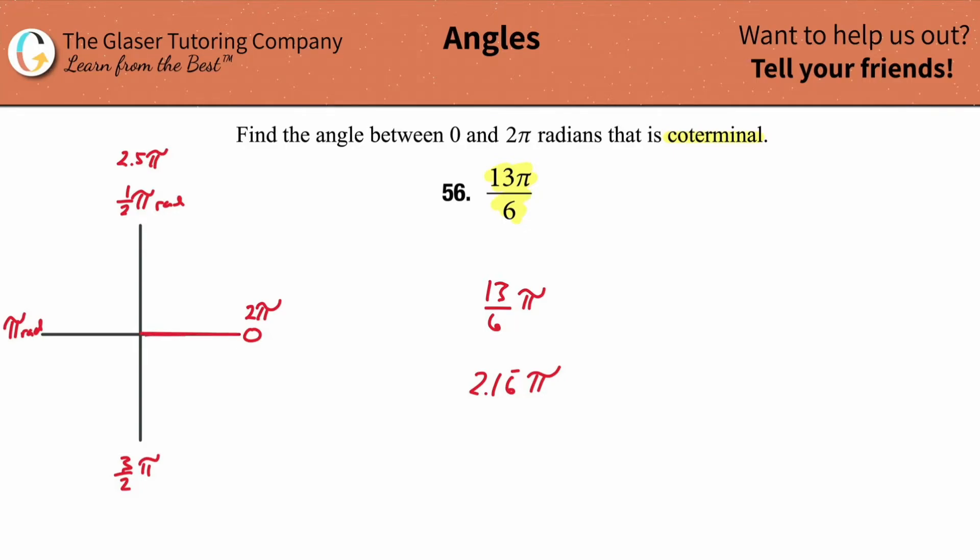Draw your initial side, then draw your terminal side, and now we're going to manipulate this terminal side. I've got to rotate this 2.16 repeating π times. So watch. Ready?